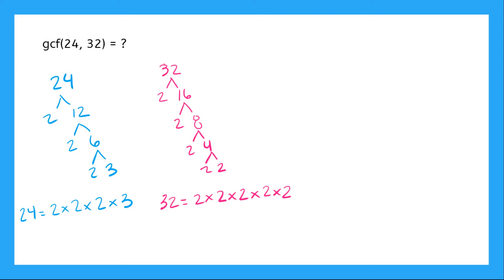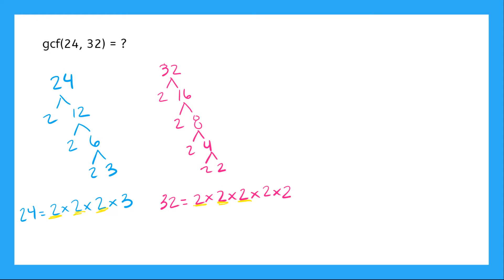So now we're going to take a look at these lists — our factors here for 24 and 32 — and we're going to find all of the matching factors. So I have a 2 right here, and I have a 2 right here. And I have a 2 here, and a 2 there, and a 2 here, and a 2 here. Then I have a 3 which is not here, and these extra 2s I don't have over here. So my matching factors are these three 2s.